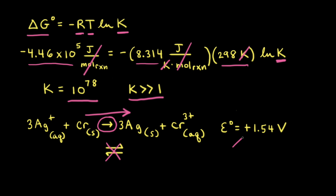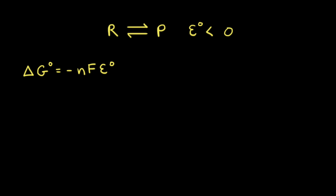We started with a positive standard potential for this redox reaction. To summarize: a positive value for the standard potential leads to a negative value for ΔG°, so a thermodynamically favored redox reaction. A negative ΔG° leads to an equilibrium constant K greater than 1.